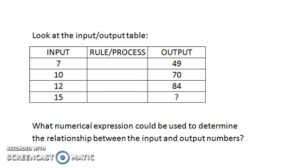What could be the relationship or the rule or the process between the input numbers and the output numbers? I know that 7 times 7 is 49 and 10 times 7 is 70. Let's see if this pattern continues.